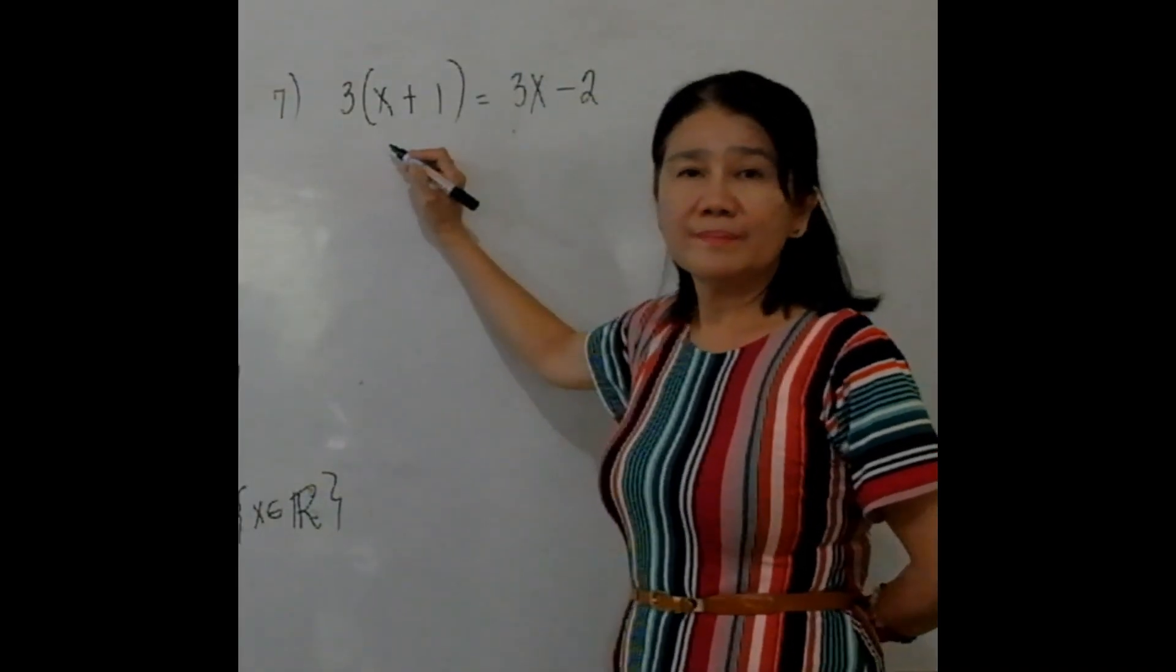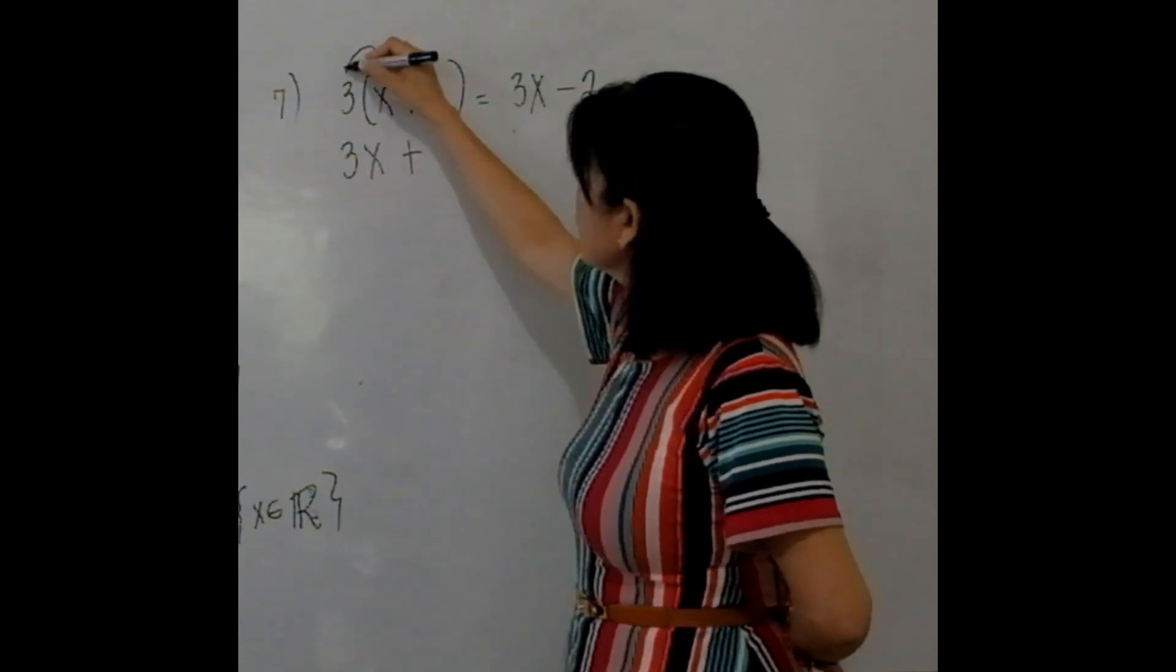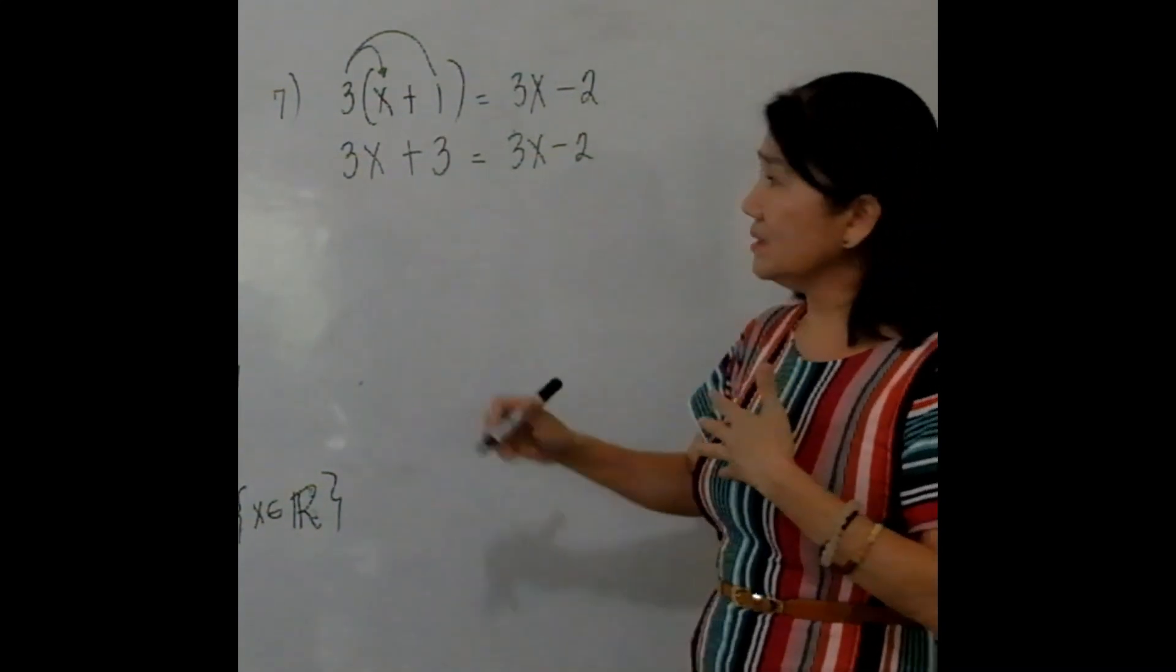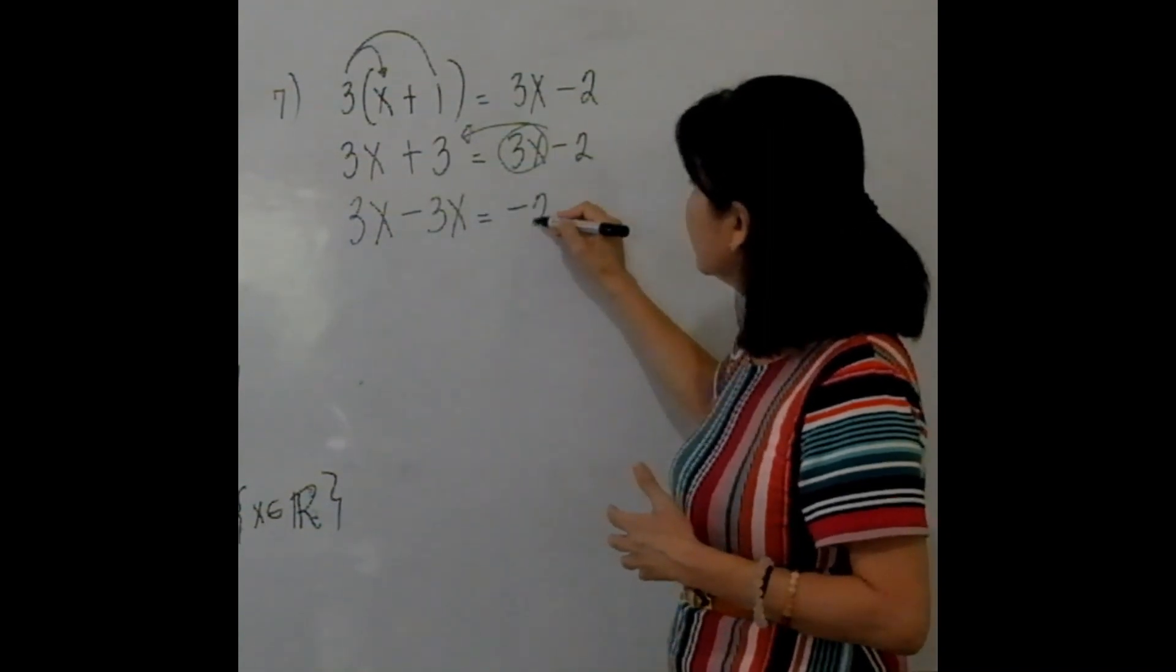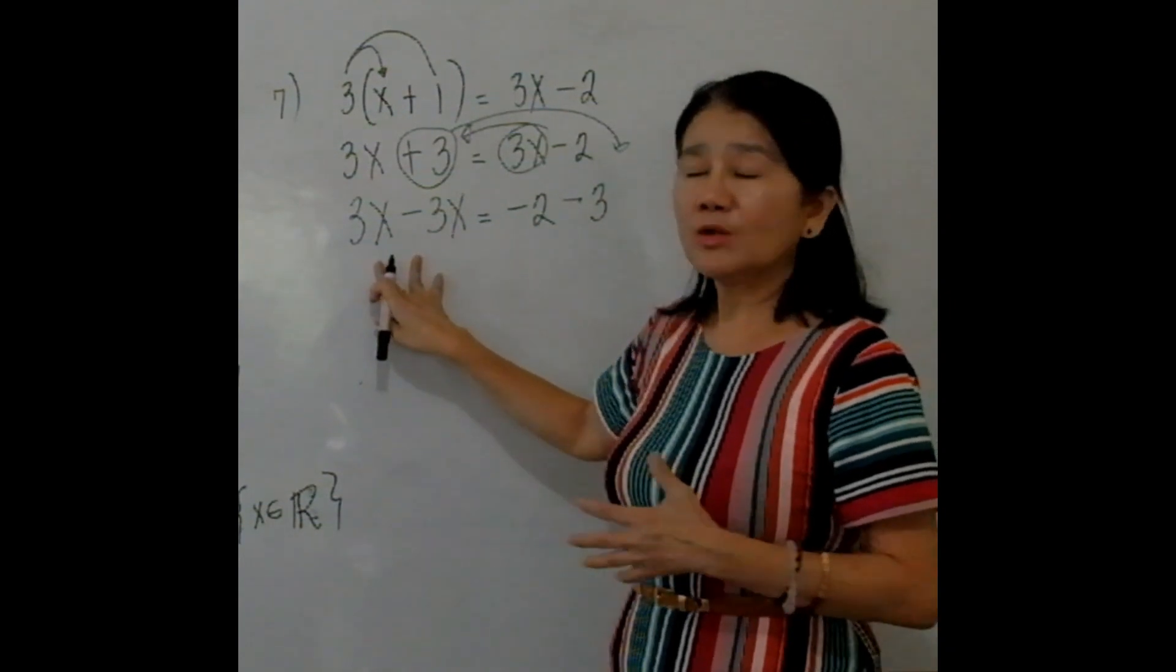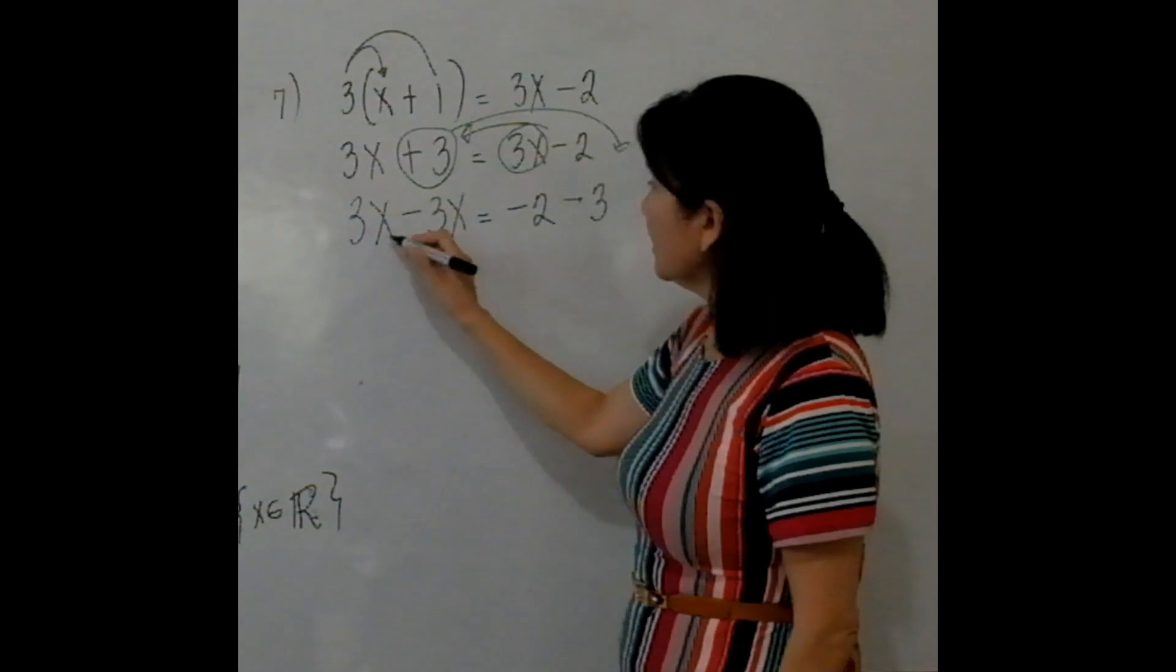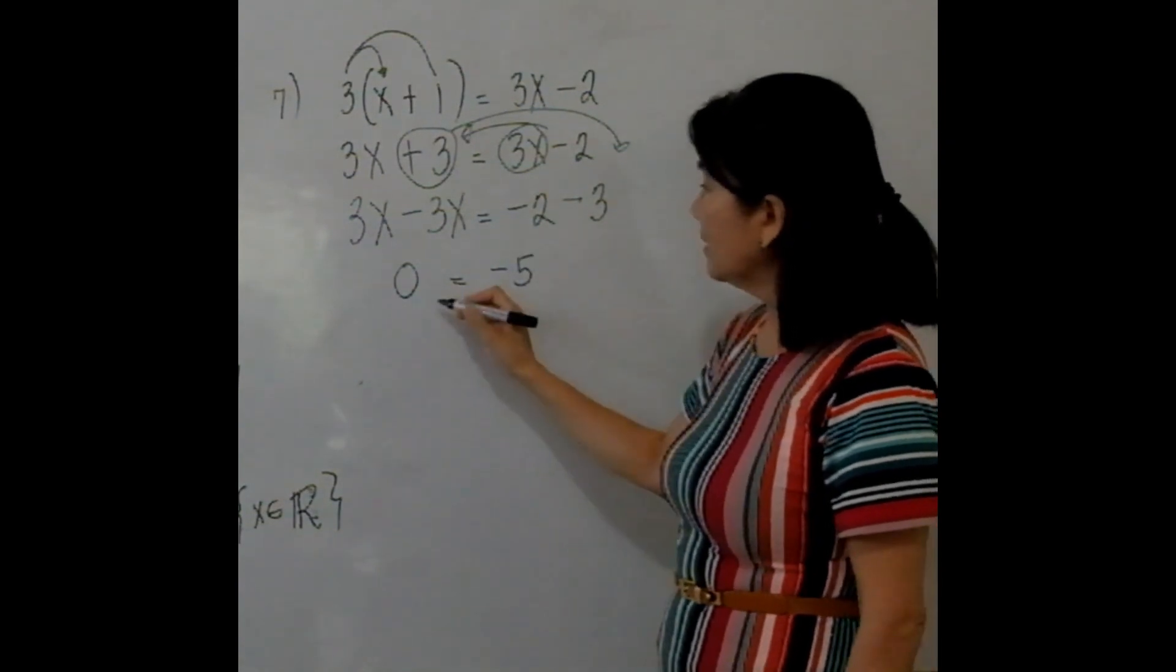Number 7. Distributive property again, distribute 3: we have here 3X + 3 = 3X - 2. But the answer now, they are not equal. Let's say you didn't notice that. Proceed. 3X transpose this to the other side, you change the sign: minus 3X = -2. Transpose this to the other side, that is negative 3. What am I doing here? Combine all those elements or all those terms with X on one side and combine all those terms without X on the other side. So 3X minus 3X gives you 0 equal to -2 minus 3 gives you -5. Are they equal? No.